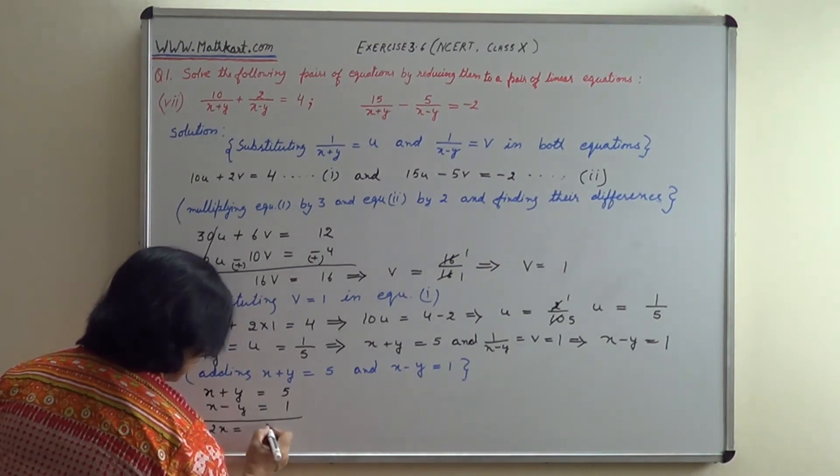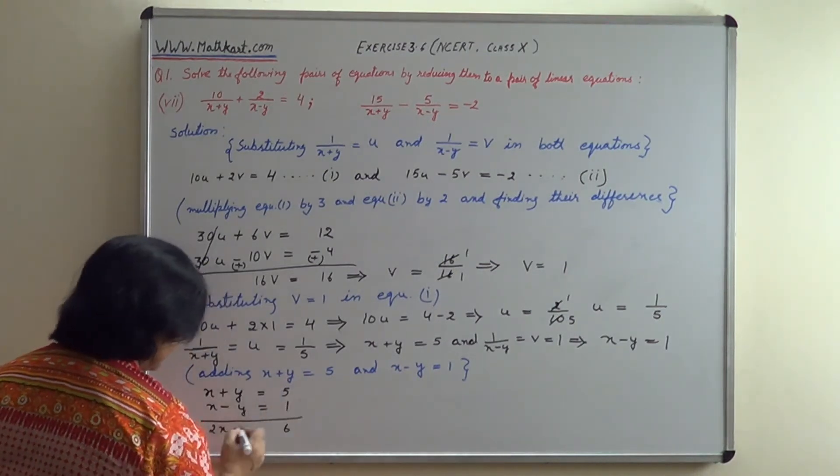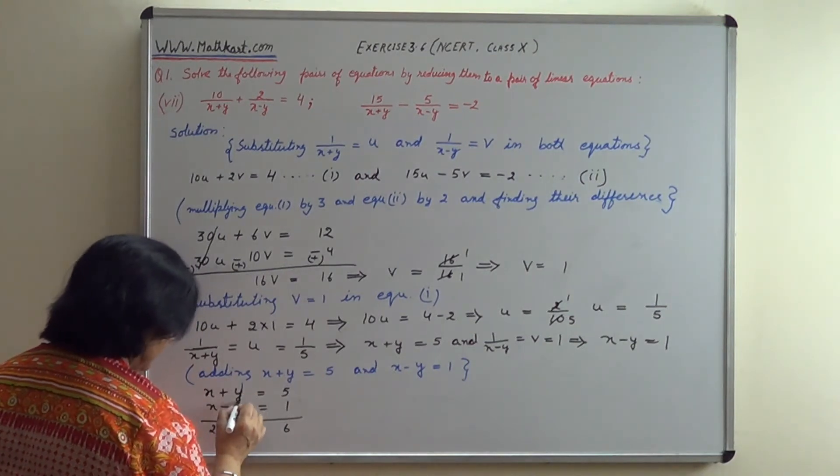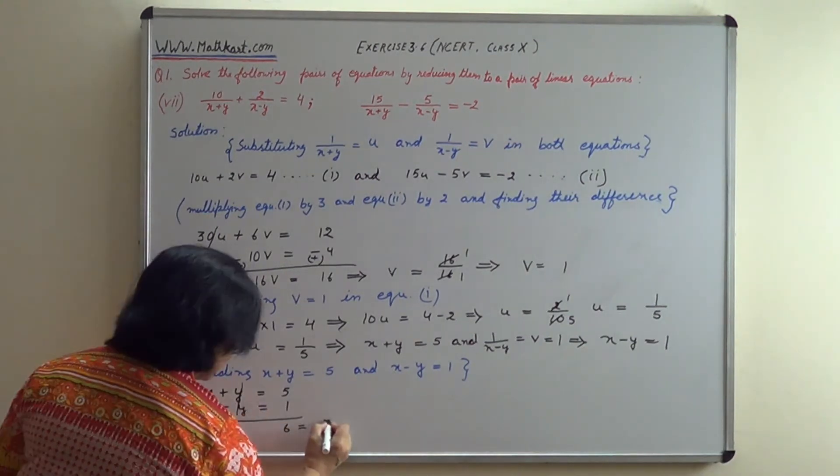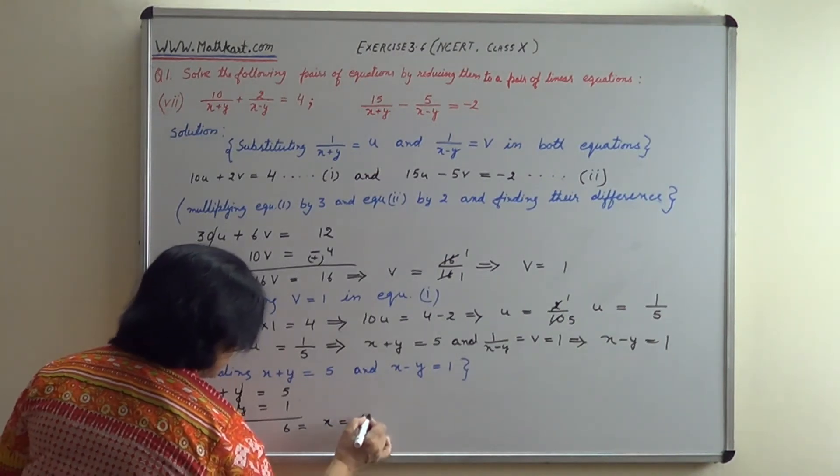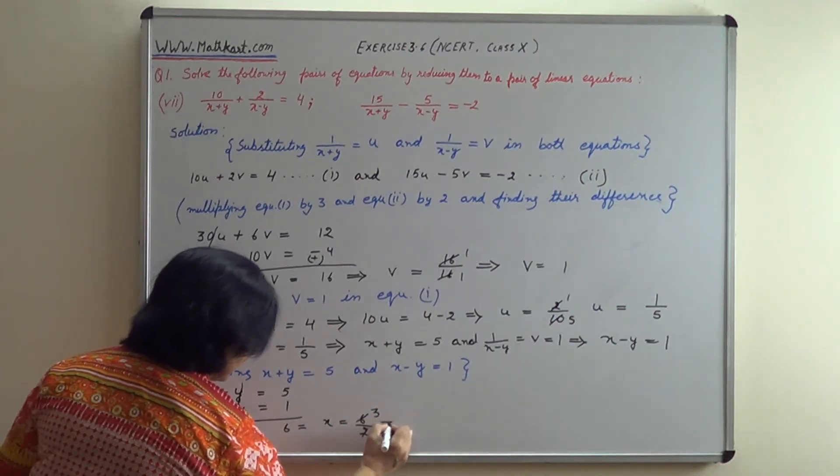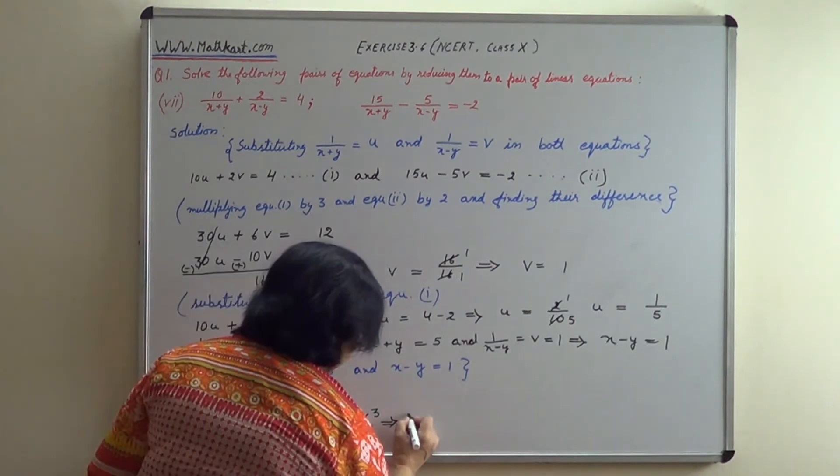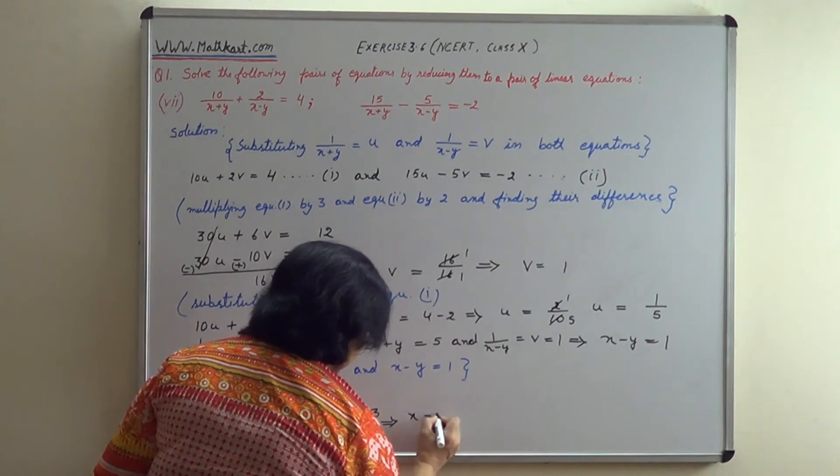Adding x plus y equals 5 and x minus y equals 1: the y terms cancel, giving 2x equals 6, which implies that x equals 3.